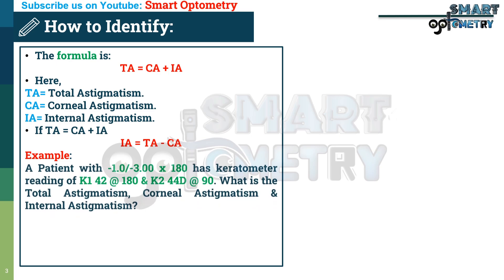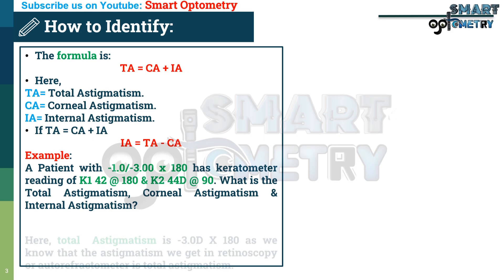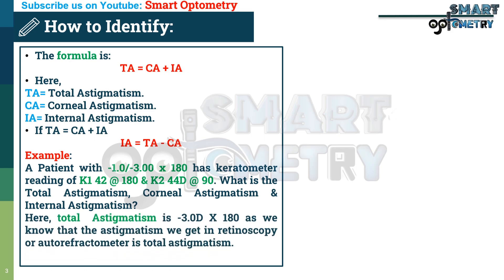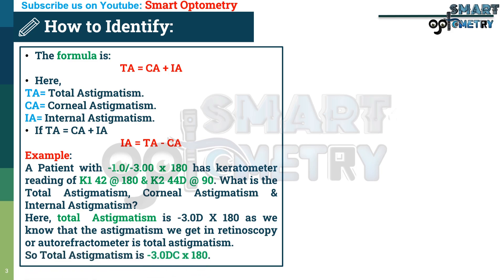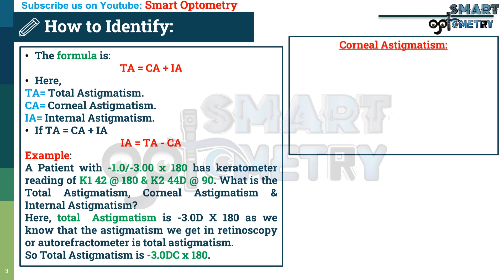Let's see an example. A patient with -1.00 / -3.00 × 180° has keratometer readings of K1 = 42 D at 180° and K2 = 44 D at 90°. What is the total astigmatism, corneal astigmatism, and internal astigmatism? Total astigmatism is -3.00 D cylinder at 180° axis, since the astigmatism we get in retinoscopy or autorefractometer is total astigmatism.